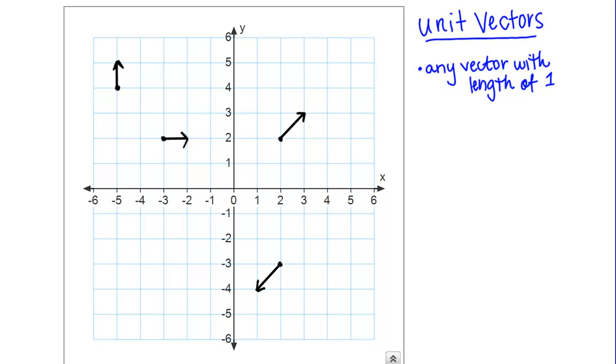Here on my graph I've drawn several unit vectors. All these vectors you can see have a magnitude or length of 1, they're just pointed in different directions. That's really simple.